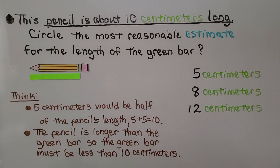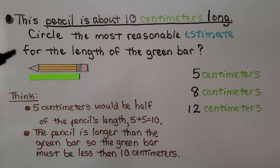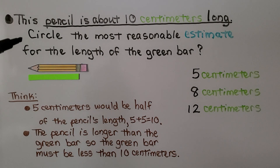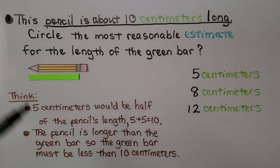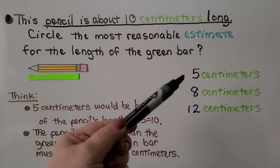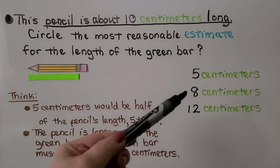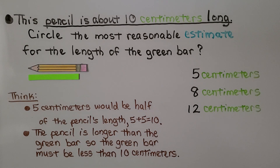This pencil is about 10 centimeters long. We need to circle the most reasonable estimate for the length of the green bar. Our choices are 5 centimeters, 8 centimeters, or 12 centimeters.